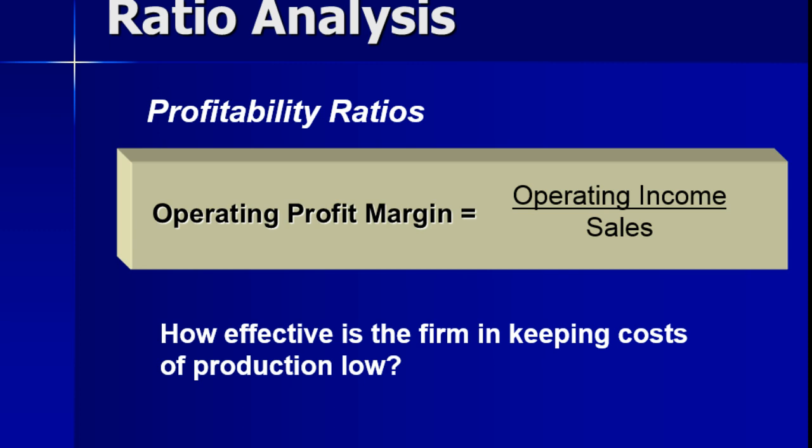Generally, the rule of thumb is the crummier the product, the more you have to advertise.